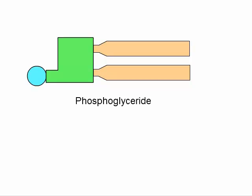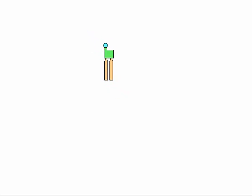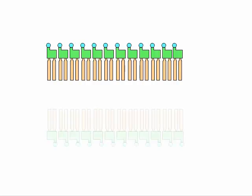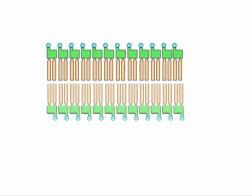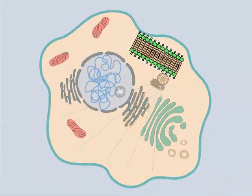Phosphoglycerides have the ability to associate with one another and form broad sheets of molecules, which can integrate with other layers of phosphoglycerides to form a bilipid barrier that is part of the cell membrane. This membrane serves to separate the intracellular contents from the extracellular environment.